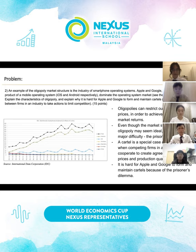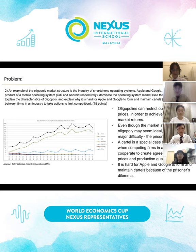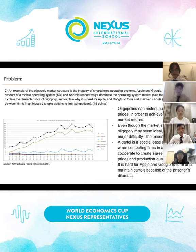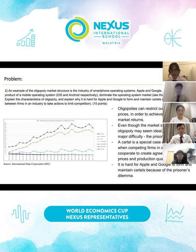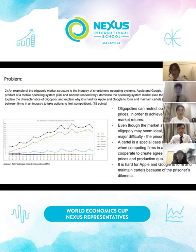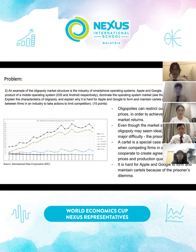Oligopoly is a market structure with a small number of firms. There is no upper limit to the number of firms in an oligopoly, but the number must be low enough so that the actions of one firm can significantly influence the others.